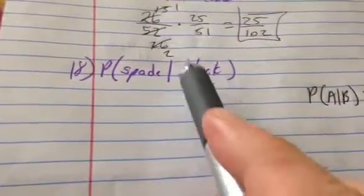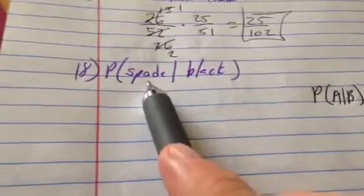They want the probability of getting a spade, given that you picked a black card. So you know you picked a black card already, so you definitely picked black. What's the probability of getting a spade?